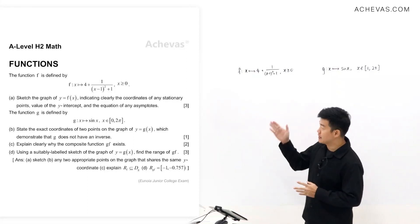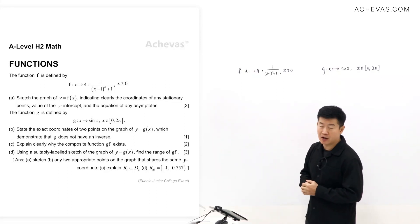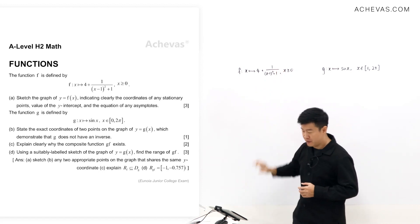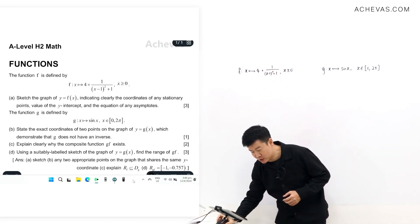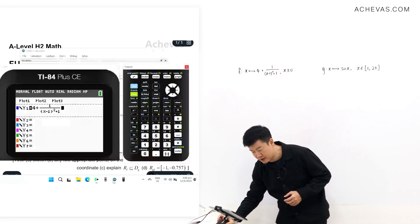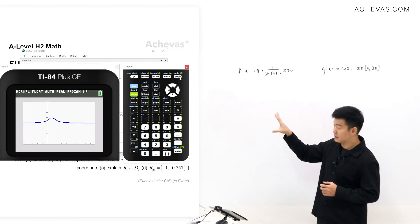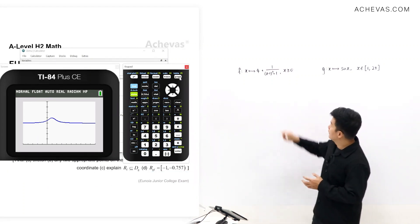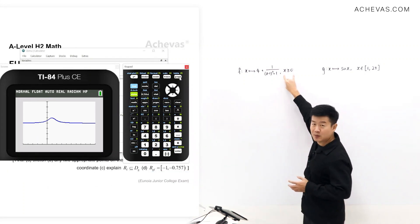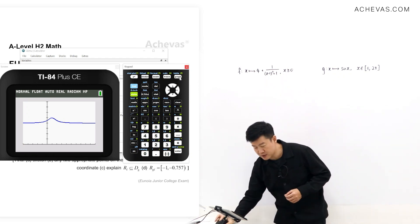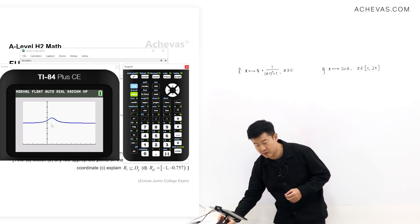In part A, we are supposed to sketch a graph of y = f(x). We're going to take the expression of f(x) and put it into our graphing calculator. Generating the graph, we get something like this. Because x is supposed to be bigger or equal to 0 as the domain of f(x), we will only be taking the portion of the graph to the right-hand side of the y-axis.